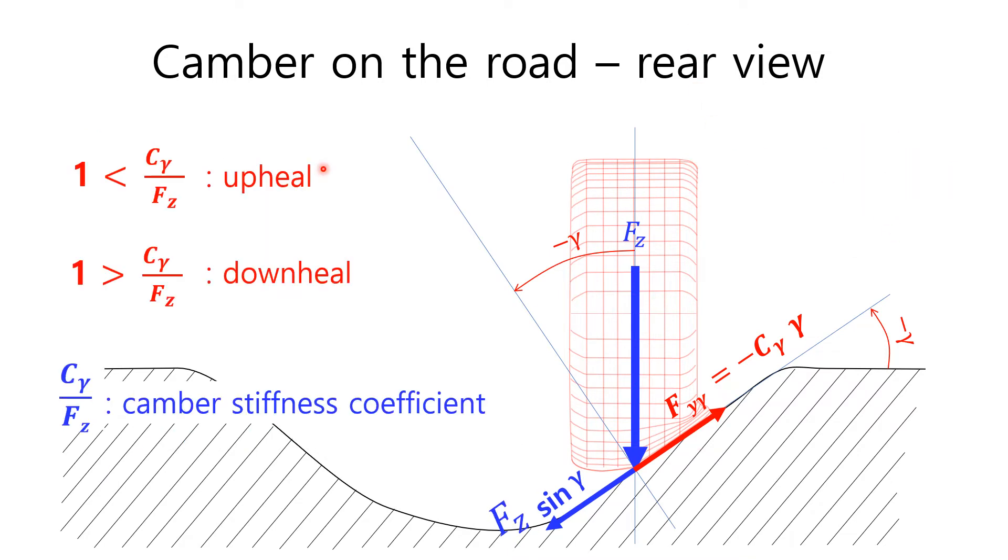If the camber stiffness coefficient is greater than 1, the tire will go uphill. If it is less than 1, the tire will go downhill.